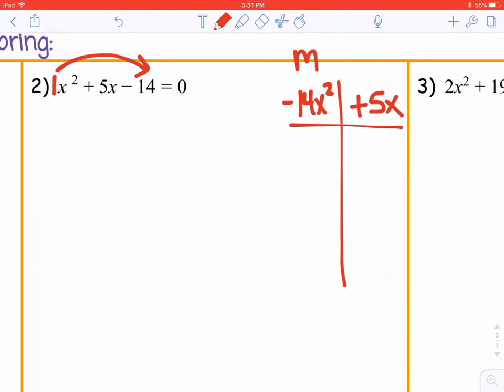We have to multiply and add. If we're multiplying to get a negative 14x squared and we're adding to get a positive 5x, we need to have a negative and a positive number. So let's start with negative 1x times 14x. Those add up to give us 13x, so they're not quite right.